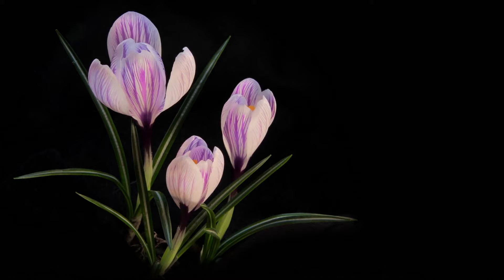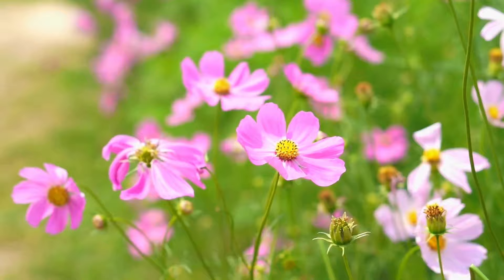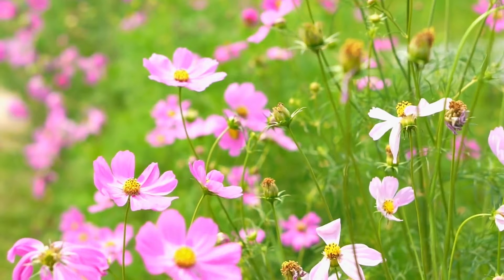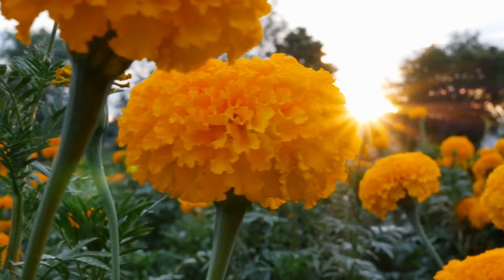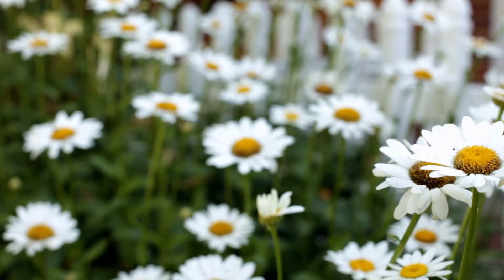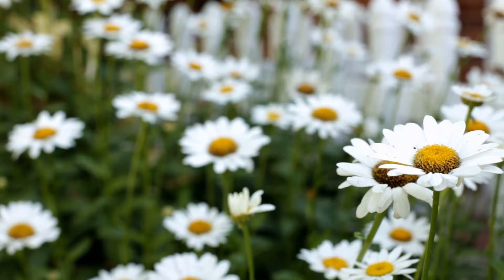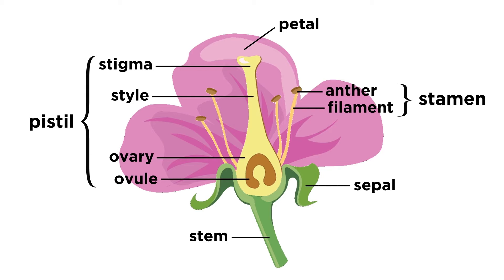If you were to imagine a flower, any type of flower you can think of, you are almost certainly envisioning an angiosperm. Even though gymnosperms also technically have flowers, the angiosperms have a much broader diversity of more obvious flowering structures. And although angiosperm plants demonstrate an incredible diversity of flowers, the basic structure of a flower remains the same regardless of species.